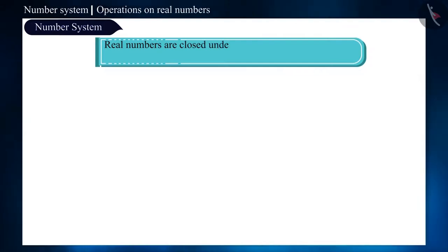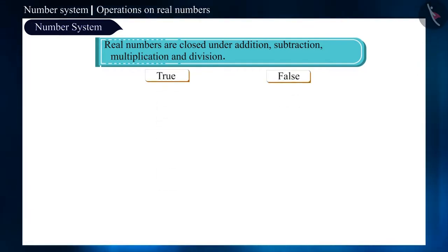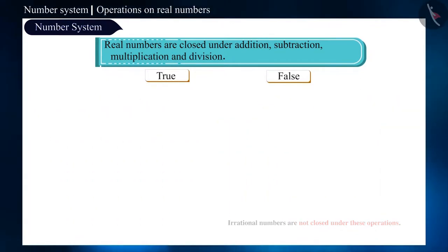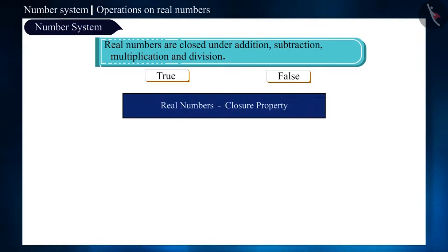Real numbers are closed under addition, subtraction, multiplication and division. Friends, tell whether the given statement is true. We have studied about the closure properties of both rational and irrational numbers. Now, let's take some examples and see whether real numbers follow the same or not.